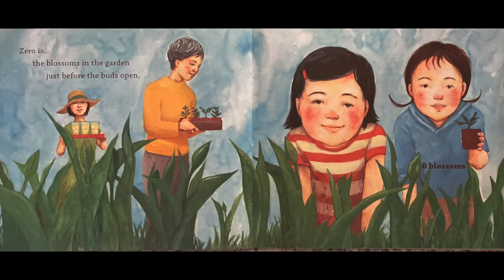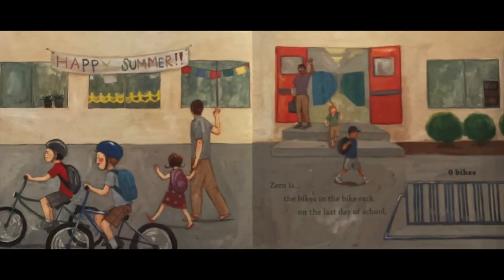Zero is the blossoms in the garden just before the buds open. Zero blossoms. Zero is the bikes in the bike rack on the last day of school. Zero bikes.